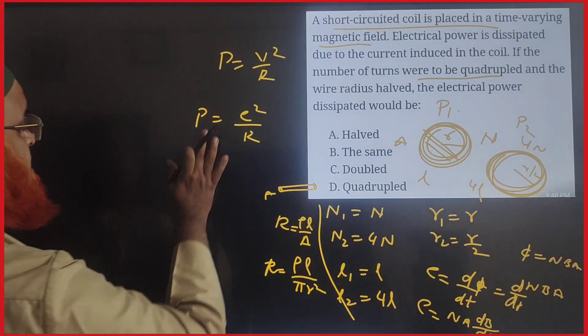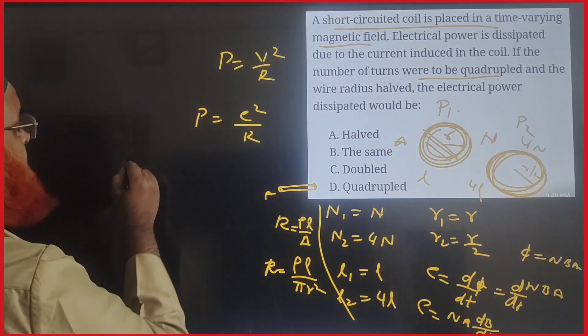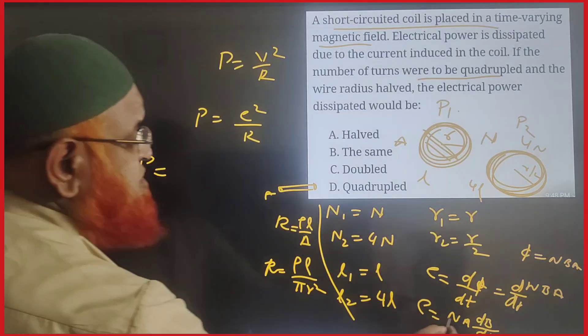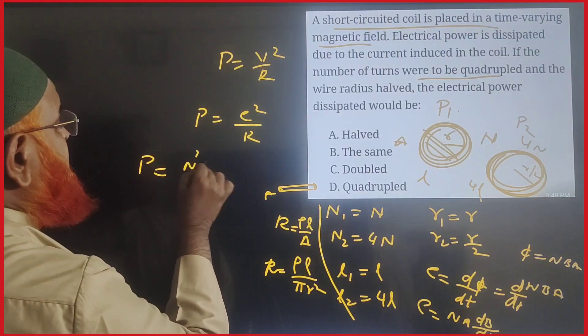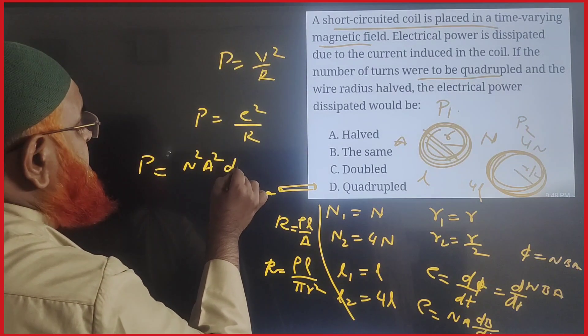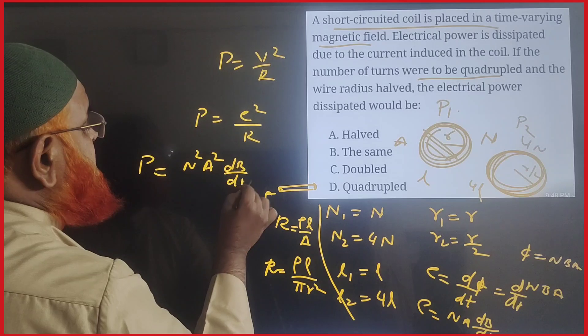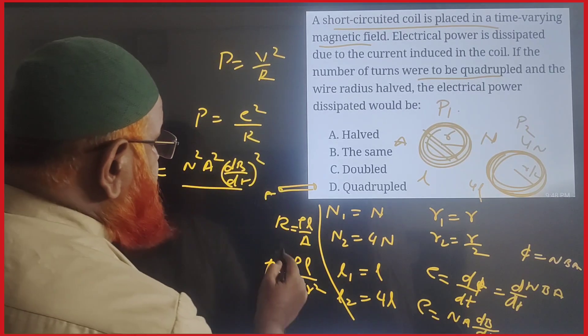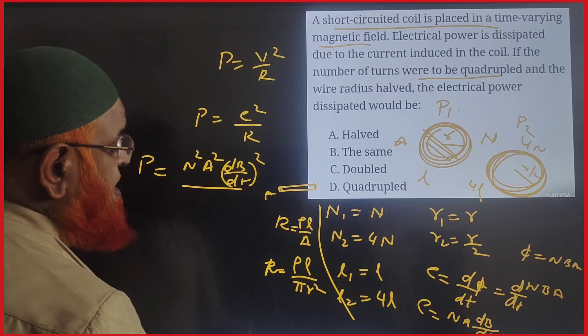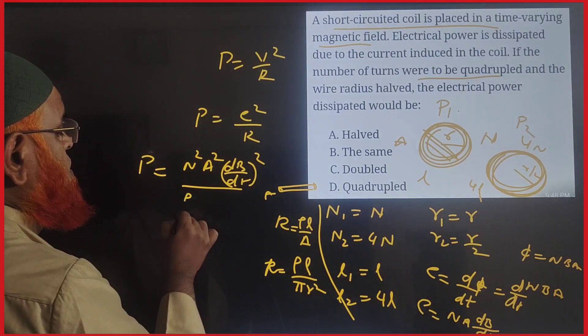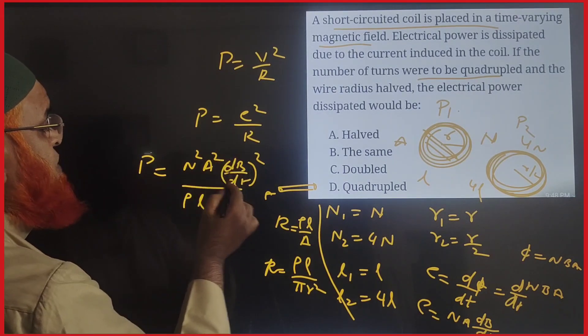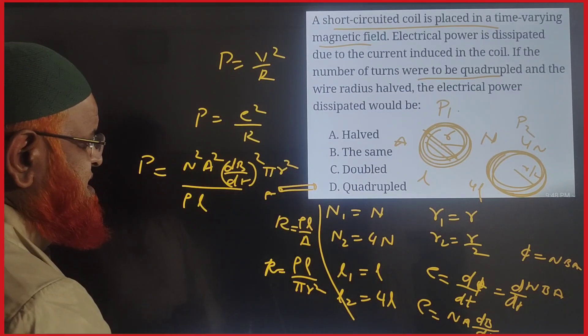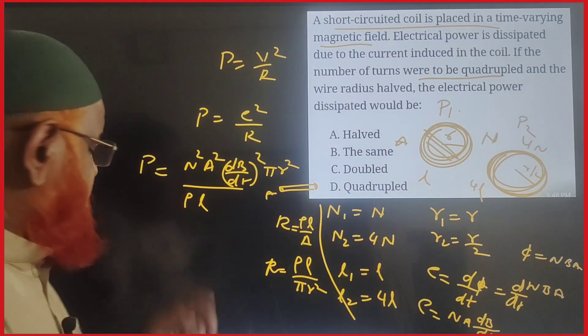So power in this case is going to become E² divided by R. That is n²A²(dB/dt)² divided by R, where R is ρl/(πr²). So πr² comes to the numerator. We have to take three variables here: n, r², and l.